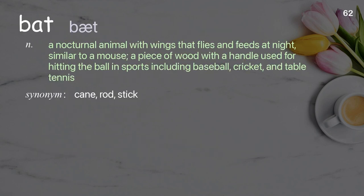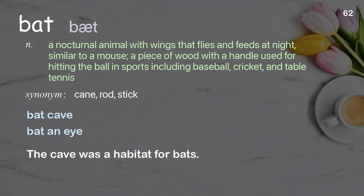Bat. A nocturnal animal with wings that flies and feeds at night, similar to a mouse; a piece of wood with a handle used for hitting the ball in sports including baseball, cricket, and table tennis. Examples: bat cave, bat an eye. The cave was a habitat for bats.